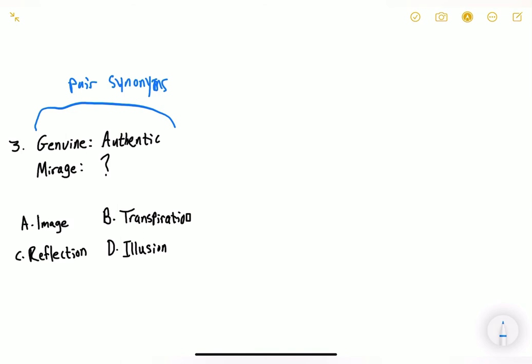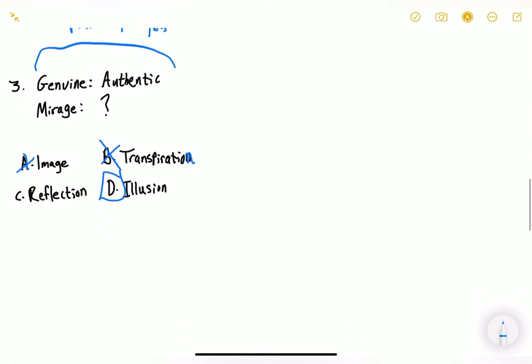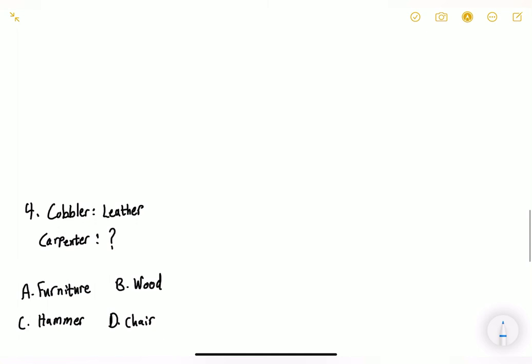First, we can cancel out image and transcription. So this is supposed to be an N. I don't know what happened. Is it a reflection or is it an illusion? So I told you that it basically means an optical illusion, meaning that the answer is automatically D. Now let's move on to question number four.